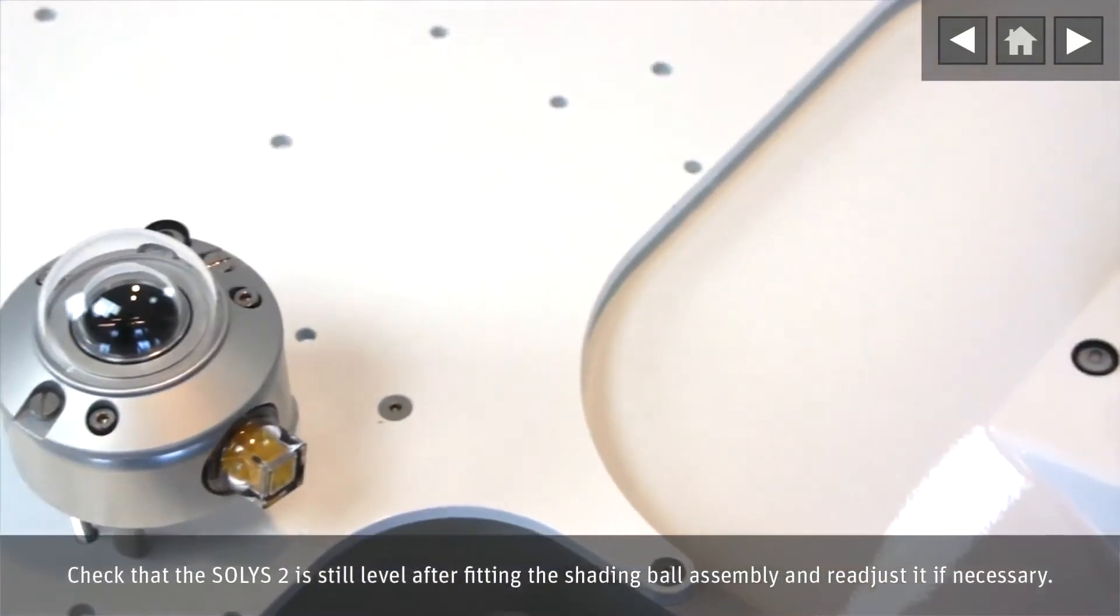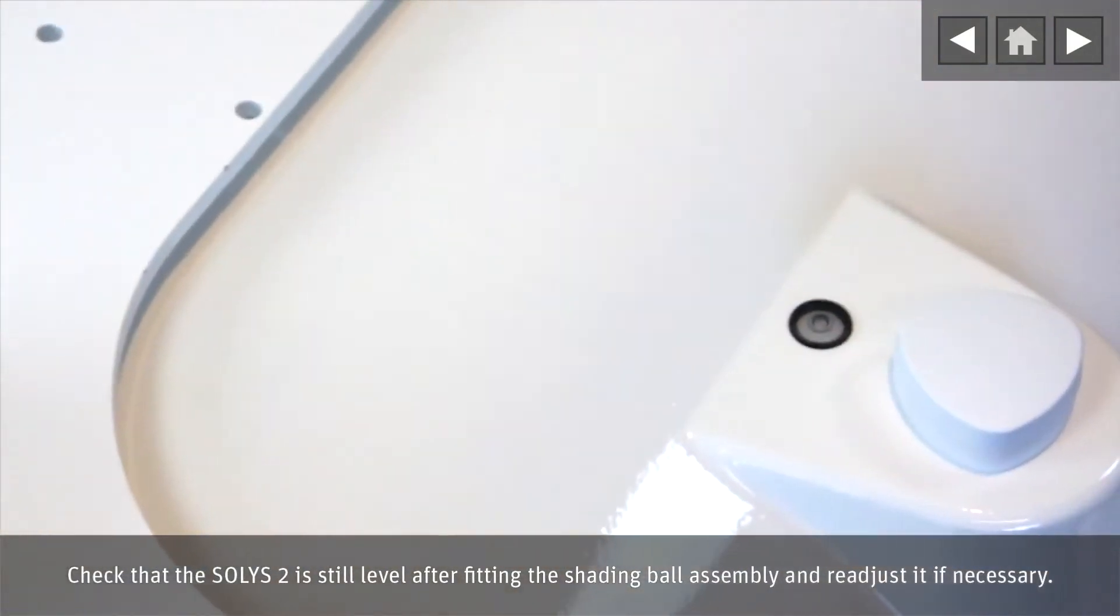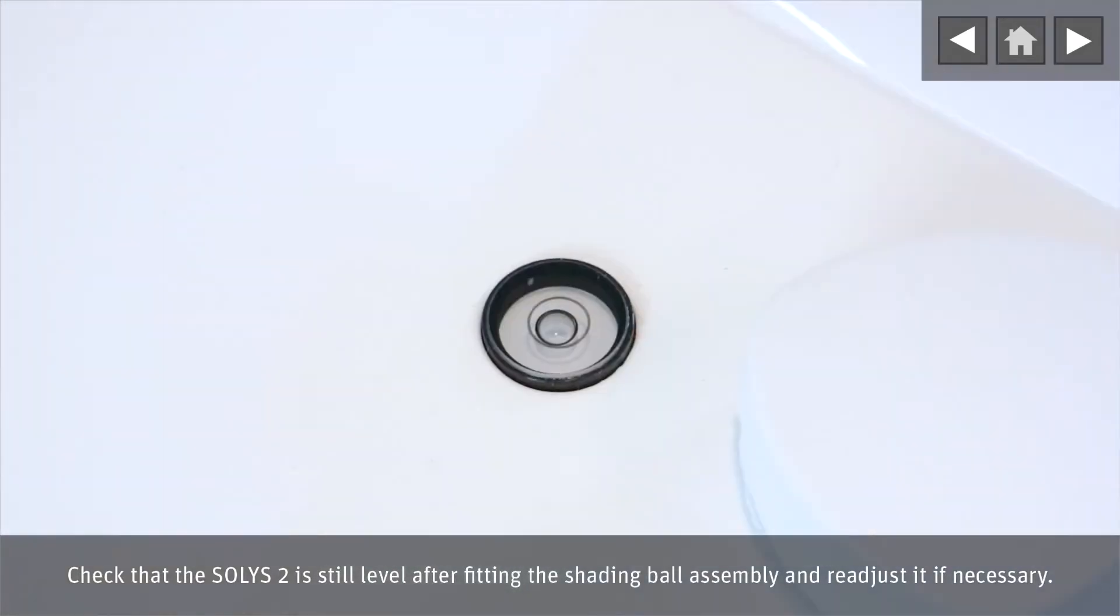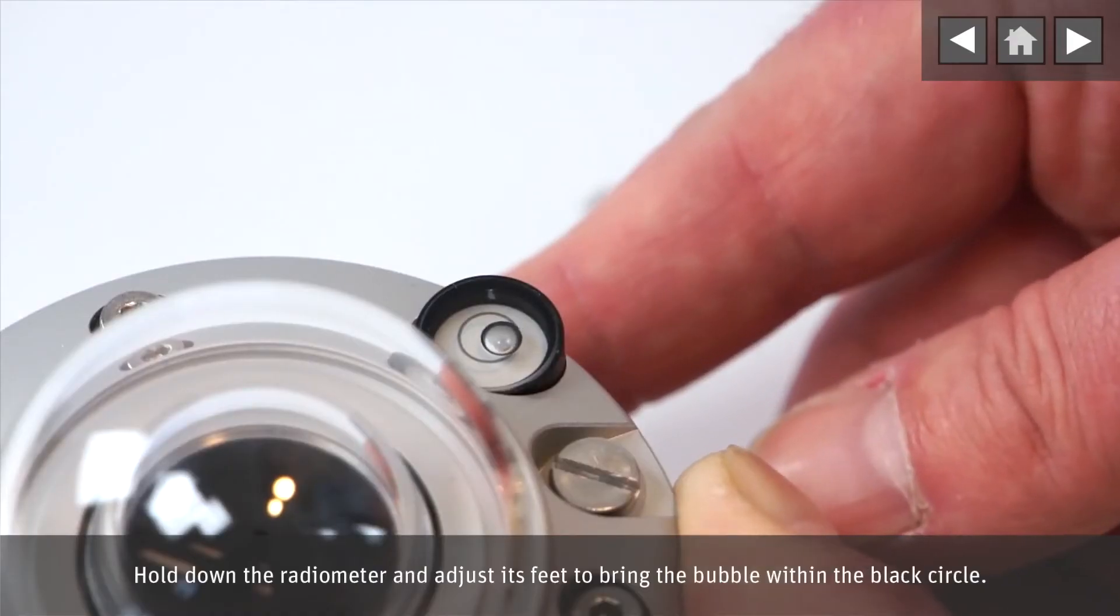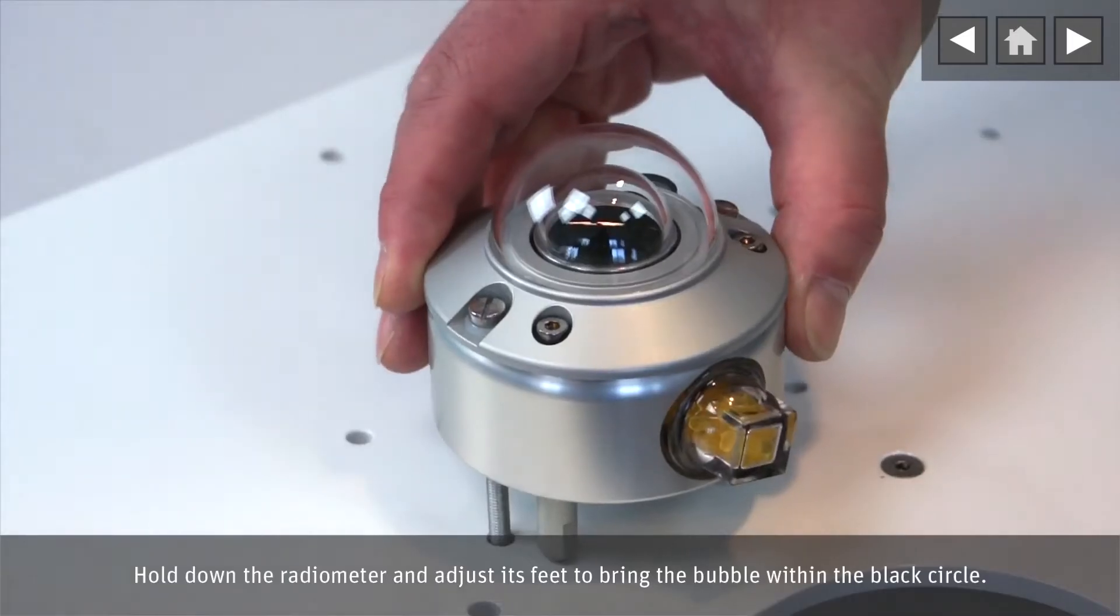Check that the Solus 2 is still level after fitting the shading ball assembly and readjust it if necessary. Hold down the radiometer and adjust its feet to bring the bubble within the black circle.